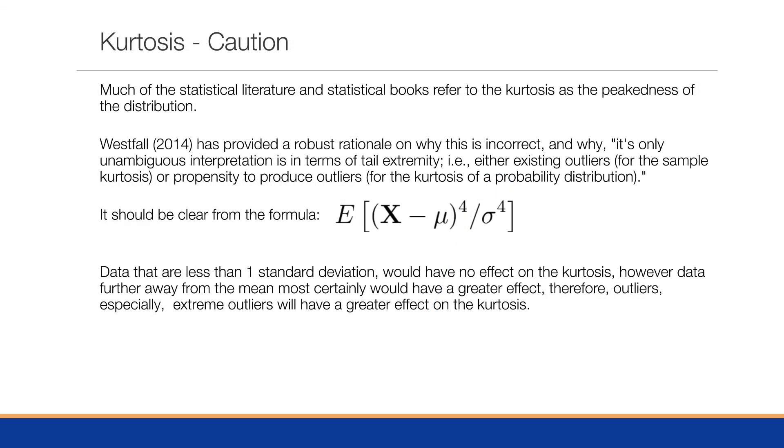A question about the fourth central moment here, this kurtosis: much of the statistical literature and books refer to it as the peakedness of the distribution. Westfall has provided a robust rationale of why this is incorrect and why the only unambiguous interpretation is in terms of tail extremity. That is, either existing outliers for the sample kurtosis or the propensity to produce outliers for the kurtosis of a probability distribution. And it should be somewhat clear from the formula.